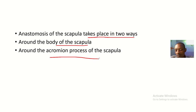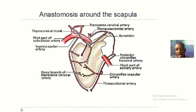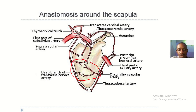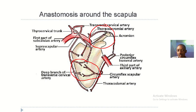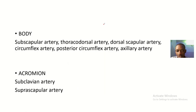So basically two anastomoses: one at the body of the scapula and one around the acromion process. The one around the body of the scapula you can see here, and the one around the acromion process you can see there. We'll be discussing these blood vessels.